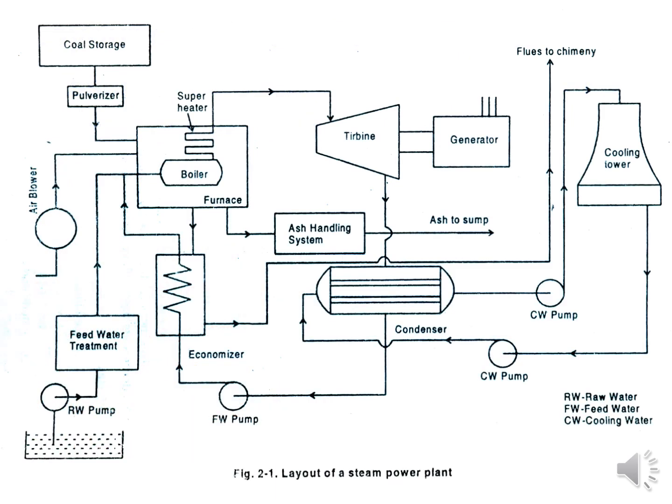This figure needs to be drawn in exams whenever they ask for a layout of a steam power plant. The main area shown is the boiler furnace. The function of the boiler is to convert liquid into superheated steam. The inputs to the boiler are feed water, coal from the coal storage, and air from the blower.